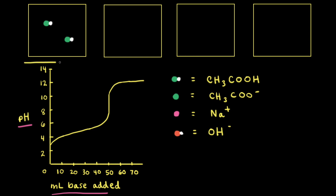Looking at our first particulate diagram, there are only two particles of acetic acid present. Therefore, this is before any base has been added — we are right at zero milliliters of base added on our titration curve.